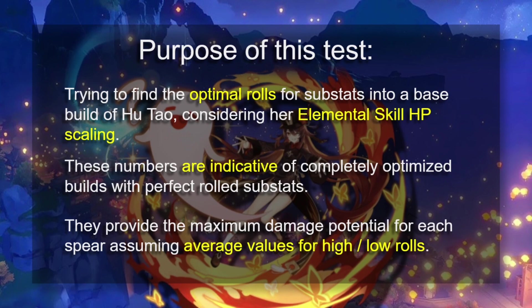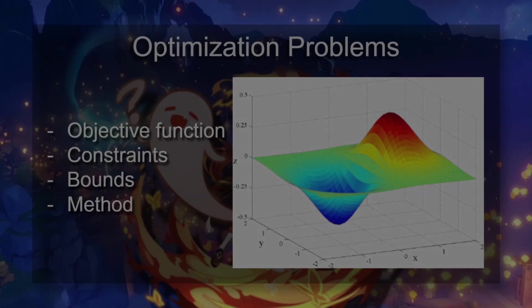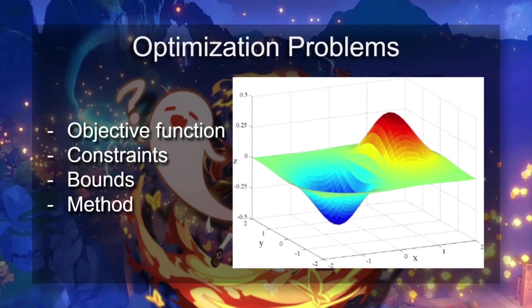Basically, finding the maximum damage potential for the spear, and here we're considering the Homa, the staff of Homa, and we're assuming average values for the high and low rolls. This is basically an optimization problem, and we're going to need four things. We're going to be finding the maximum of this function.